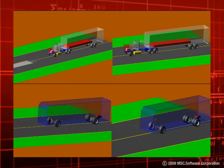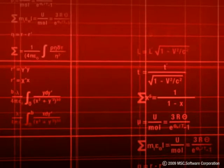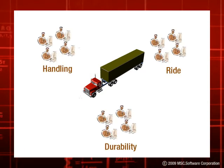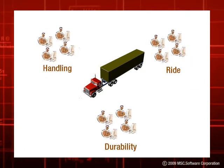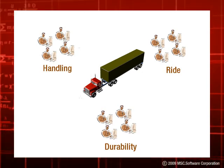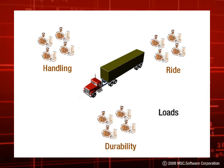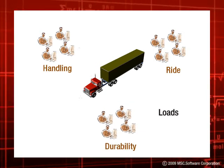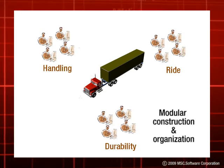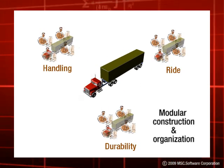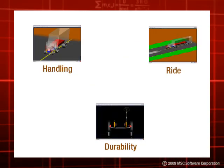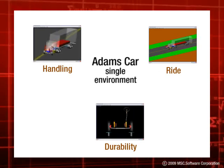Just like their passenger car counterparts, the new Adams Truck models can serve the analysis needs of what are often multiple separate engineering departments. For example, the team looking at ride and handling analyses of the suspension and full vehicle may be separate from the team examining loads throughout the vehicle for durability purposes during simulated four post-actuation tests or travel over a rough road. The model's modular construction and organization allows engineers in all groups to evolve the models for their specific needs, and Adams Car provides a single software environment in which all of this can occur.